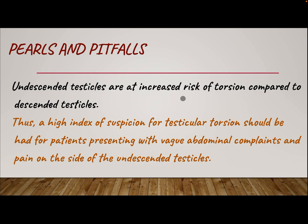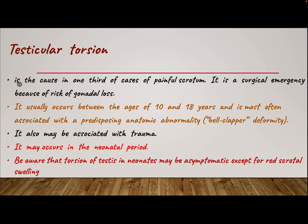Undescended testes are at increased risk of torsion compared with descended testicles. Thus, a high index of suspicion for testicular torsion should be maintained for patients presenting with abdominal complaints and pain on the side of the undescended testicle. Testicular torsion is the cause of one third of cases of painful scrotum. It is a surgical emergency due to the risk of gonadal loss. It usually occurs between the ages of 10 and 18 years and is most often associated with a predisposing anatomical abnormality. It may also be associated with trauma and may occur in the neonatal period. Be aware that torsion of the testis in the neonate may be asymptomatic except for red scrotal swelling.